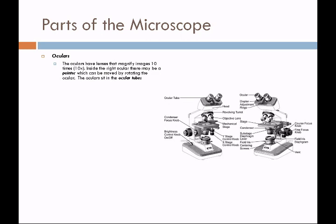Inside the right ocular, there may be a pointer. It's going to appear as a line, and it can be moved by rotating the ocular. The ocular sits in an ocular tube. Below the ocular is a diopter adjustment ring. This ring is used to accommodate the fact that both of your eyes may not be focused the same. Most of you will find that you don't have to do any adjustments, that your eyes are pretty close in their ability to magnify.